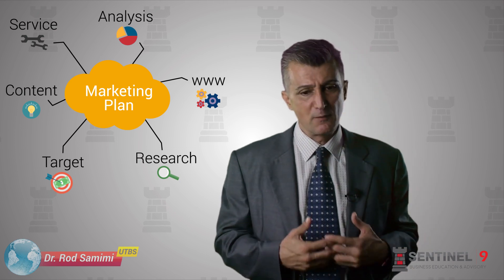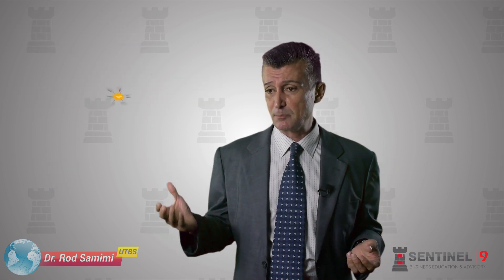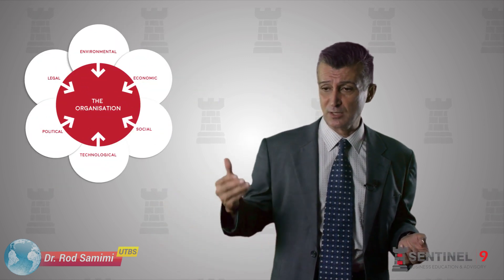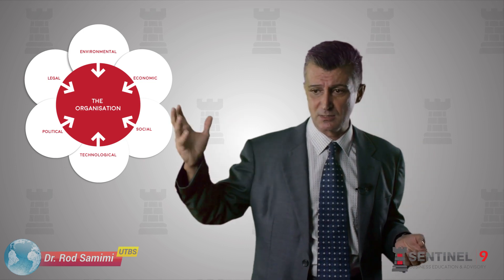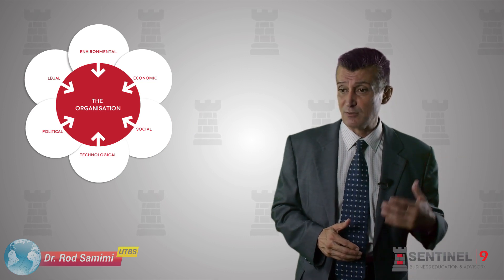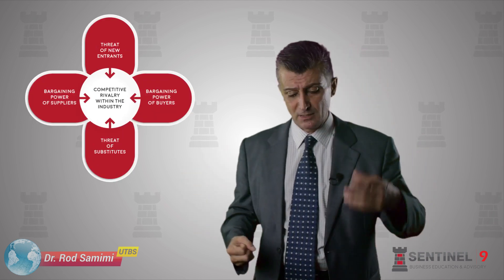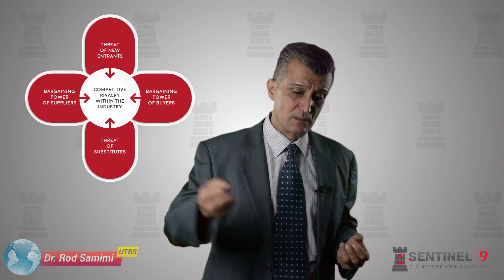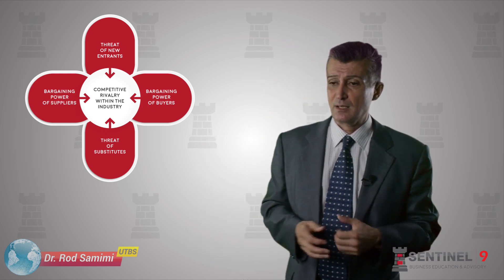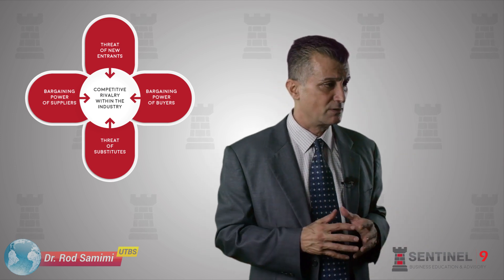When looking at external plans, it's good to start with the macro environment. Tools like PESTEL — Political, Economic, Social, Technology, and Legal — are very useful for examining the macro environment. Then you look at the microeconomic environment, and one of the very good models for that is Michael Porter's Five Forces, which looks at degree of rivalry, threat of substitution, threat of new entry, and so forth — five elements that encapsulate the micro environment.